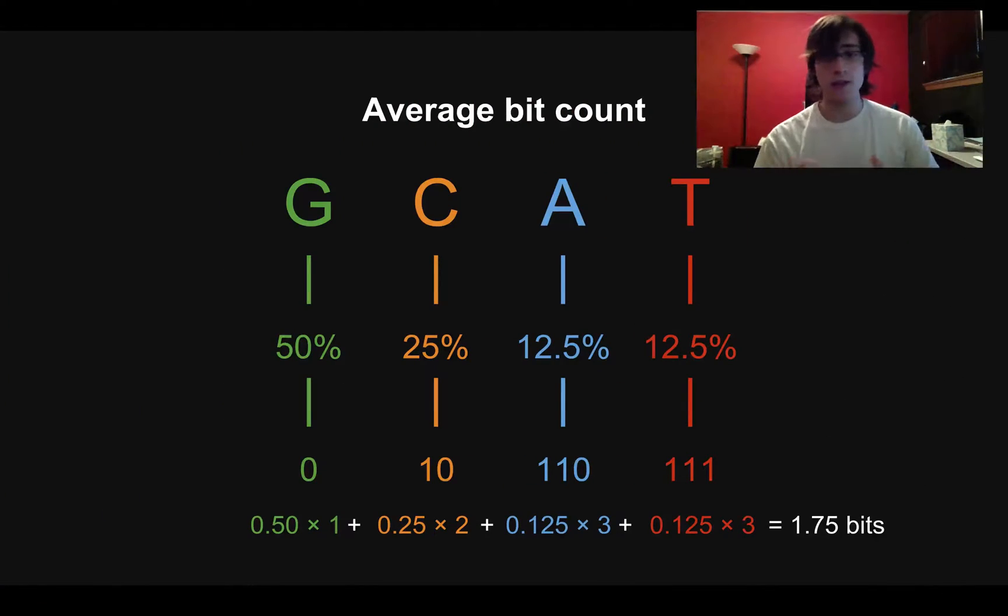And to do that, we're going to use a weighted average. So 50% of the time, we have one bit. So we're going to do 0.5 times 1. That just represents half of the time we have one bit. 25% of the time, we're going to be using two bits because C happens 25% of the time. 25% of the letters in these lumpy sequences are C. So we're going to add on to our weighted average 0.25 times two bits.